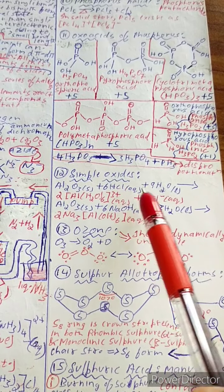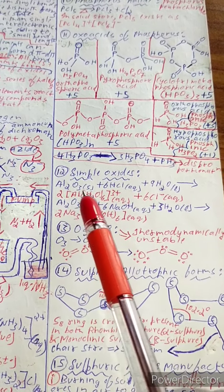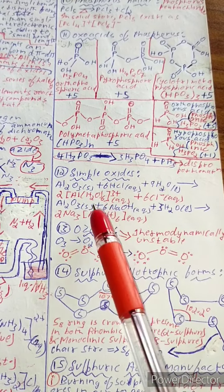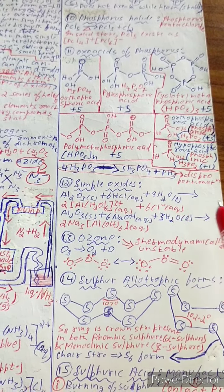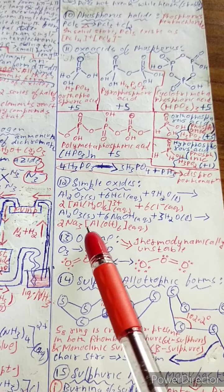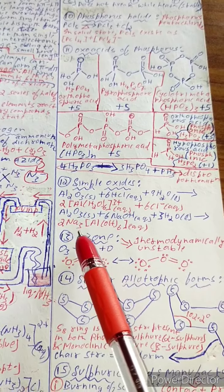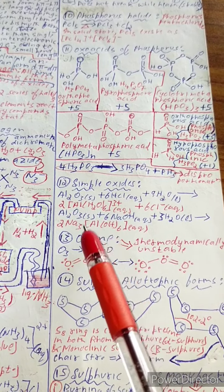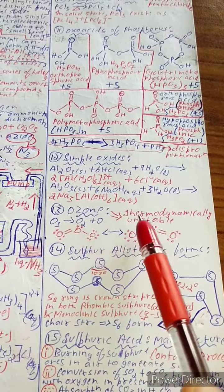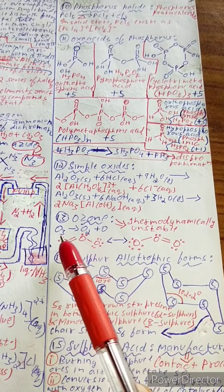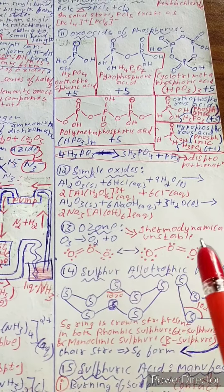Simple oxides: Al₂O₃(s) + 6HCl(aq) + 9H₂O(l) → 2[Al(H₂O)₆]³⁺(aq) + 6Cl⁻(aq). Al₂O₃(s) + 6NaOH(aq) + 3H₂O(l) → 2Na₃[Al(OH)₆](aq). Ozone is thermodynamically unstable: O₃ → O₂ + O, and exists in equilibrium.